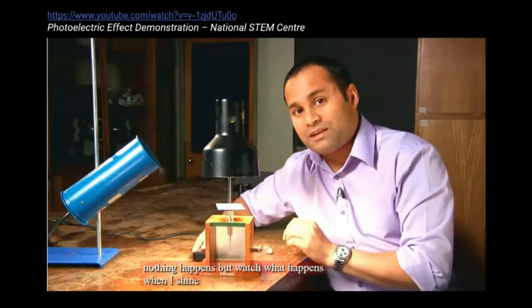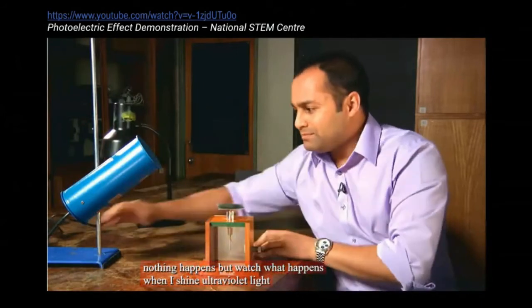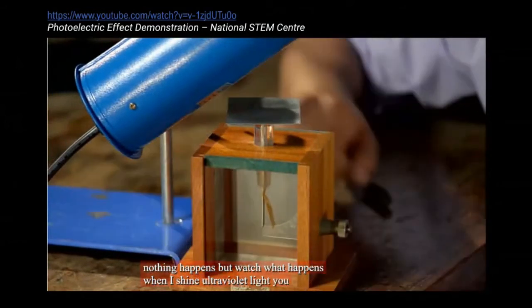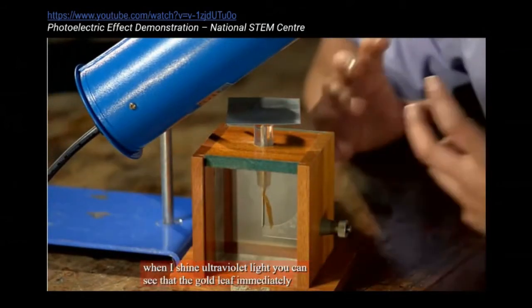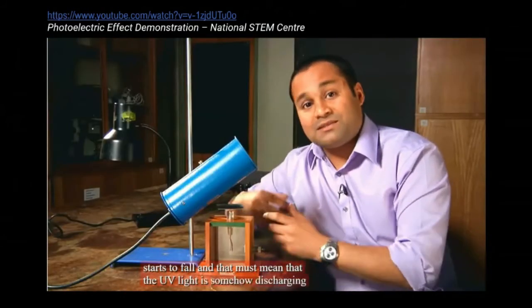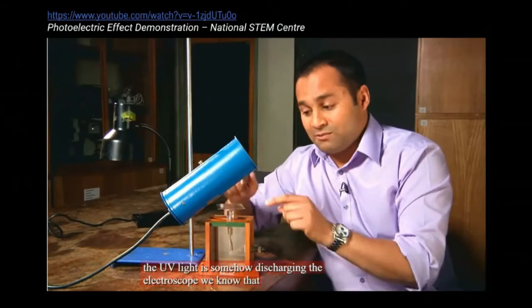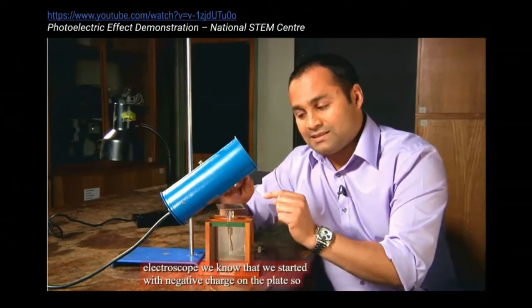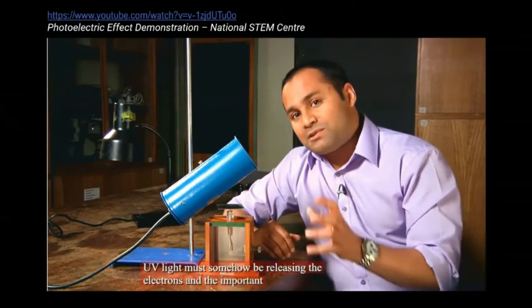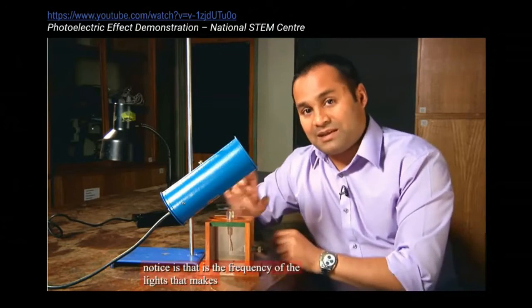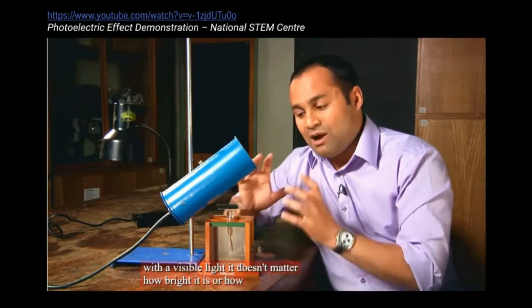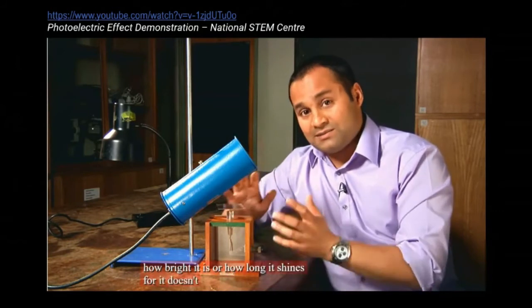But watch what happens when I shine ultraviolet light. You can see that the gold leaf immediately starts to fall, and that must mean that the UV light is somehow discharging the electroscope. We know that we started with negative charge on the plate, so the UV light must somehow be releasing the electrons. And the important thing to notice is that it's the frequency of the light that makes a difference. Remember, with visible light, it doesn't matter how bright it is or how long it shines for. It doesn't release any electrons.